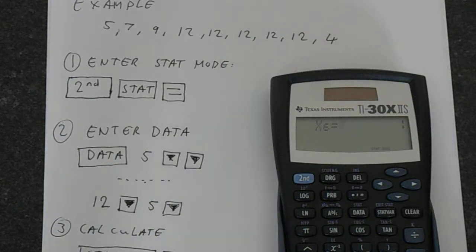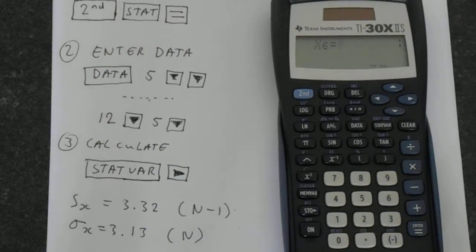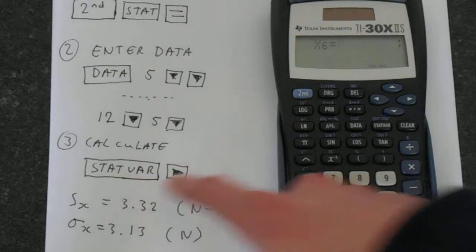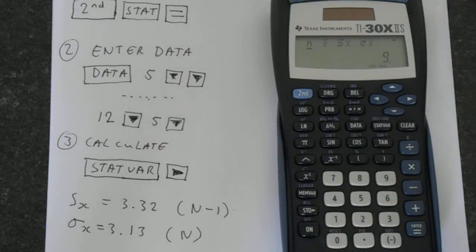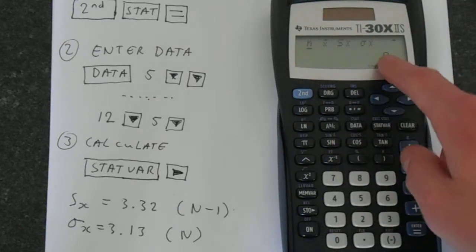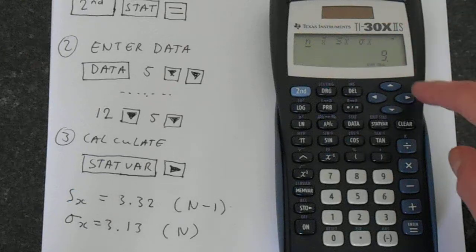Last step, very simple. We just do the calculation. This calculator does it in a very nice way. If we press the stat var button here, just press that. It calculates everything for you. We've got N of nine. You count these—there is, of course, nine of them.